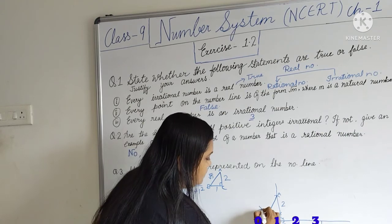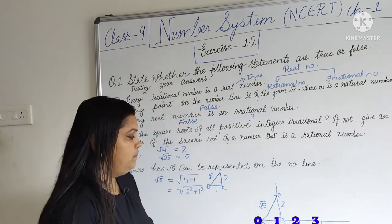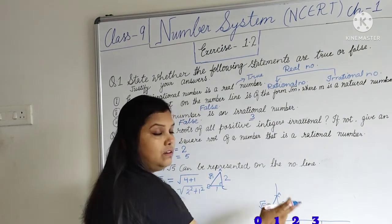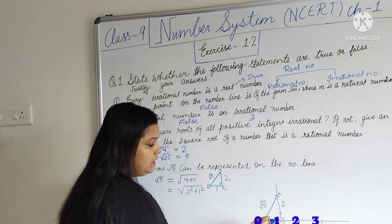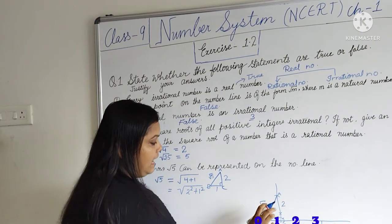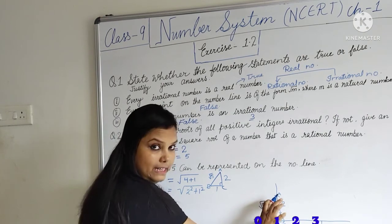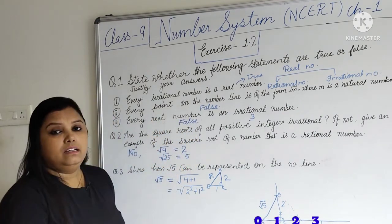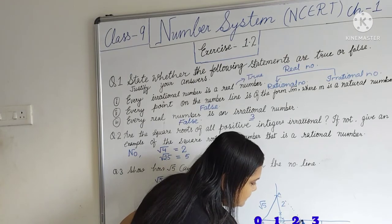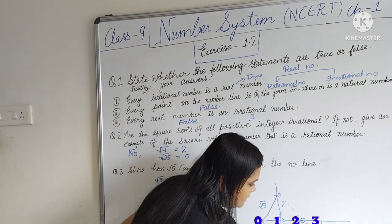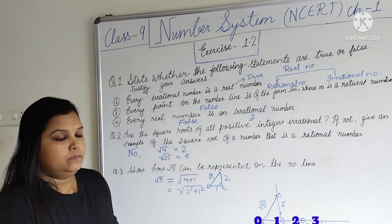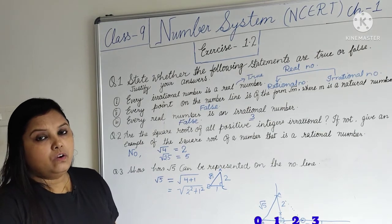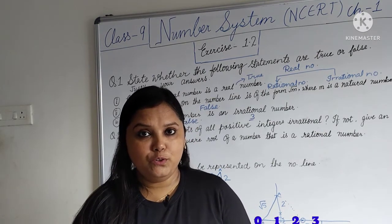We join points A and B, and AB will equal √5. To represent √5 on the number line, we take B as the center and AB as the radius, and draw an arc cutting the number line. We mark this point, which represents √5. The value of √5 is approximately 2.24.